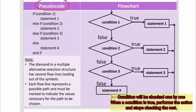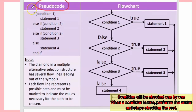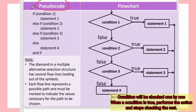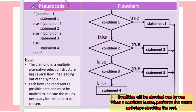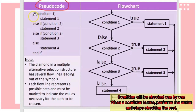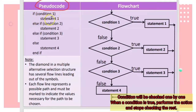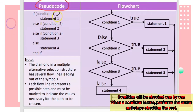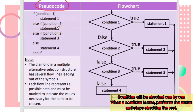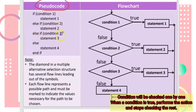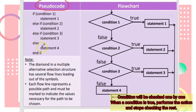For pseudocode, this is the general format to write a multiple alternative pseudocode. Start with: if condition one, followed by statement one. If condition one is false, else if condition two, followed by statement two. If condition two is false, else if condition three, followed by statement three. Otherwise, else statement four, and end if.